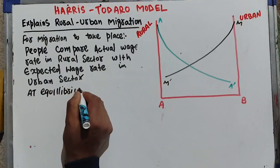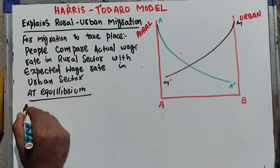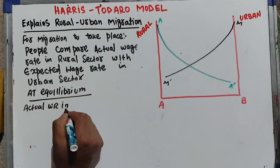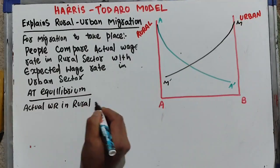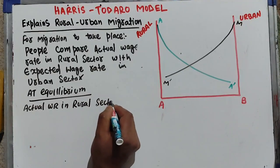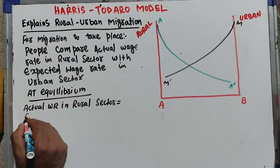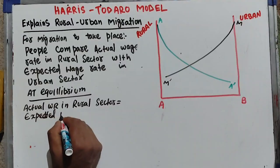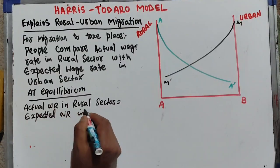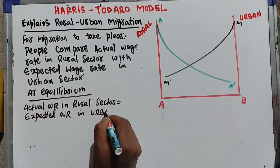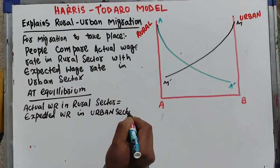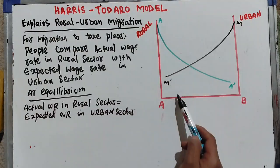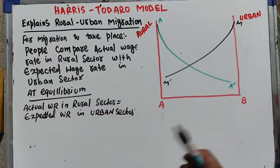At equilibrium, the actual wage rate in the rural sector should be equal to the expected wage rate in the urban sector. We have two curves: the labor demand curve for the rural or agricultural sector (AA prime), and MM prime, the labor demand curve for the manufacturing sector.